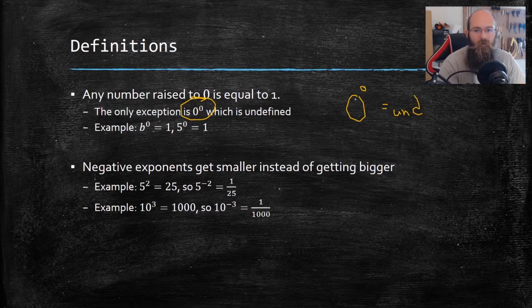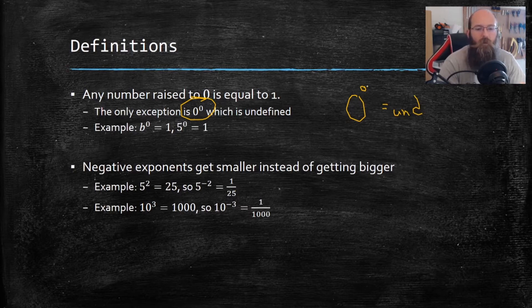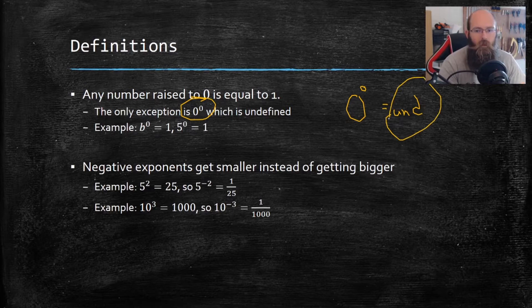We can't define that thing because zero raised to zero is zero times itself a zero number of times. It's just weird, it just doesn't happen. So we don't really see that often, but we have to know that it is undefined.